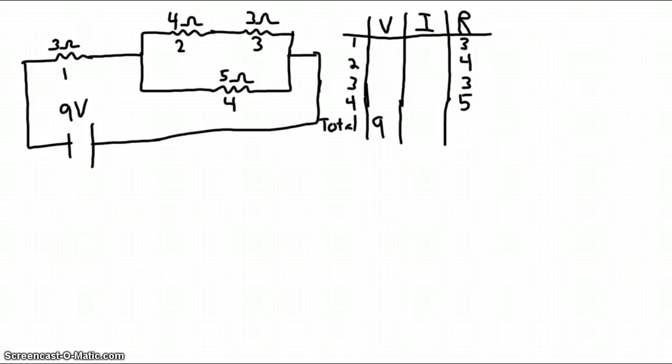To get started, I will find the total resistance by using the addition rules for series and parallel circuits. First, I will add resistors 2 and 3 since they are exclusively in series.